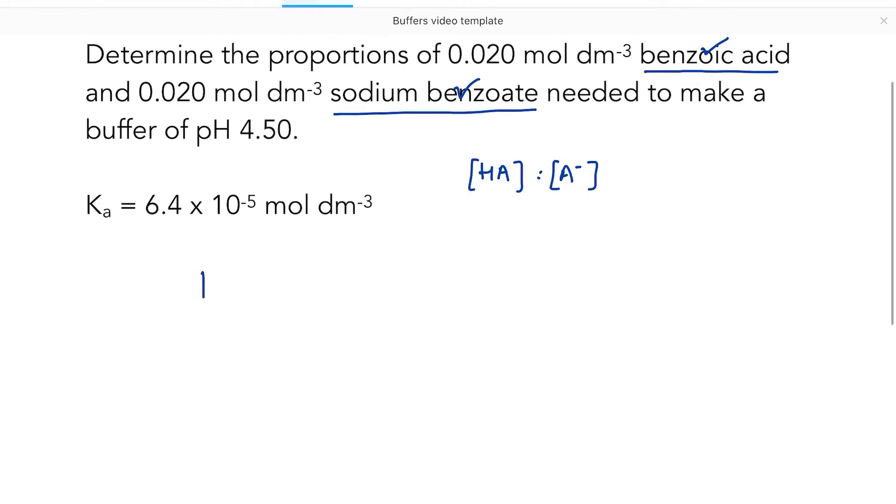So our method stays the same. Let's write out the expression for our buffer system. So Ka equals H+ times A- over HA. So first of all, I know what my Ka is. It's 6.4 times 10 to the minus 5.